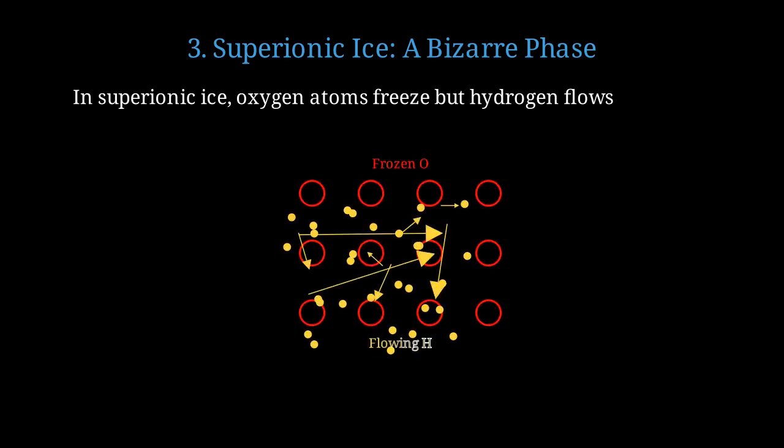Here's a representation of superionic ice. The red circles are frozen oxygen atoms in a lattice, while yellow dots represent hydrogen ions flowing freely between them.